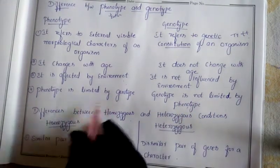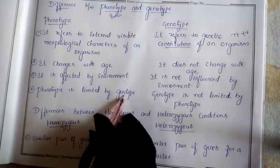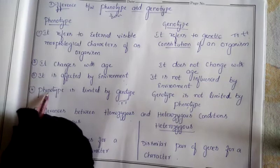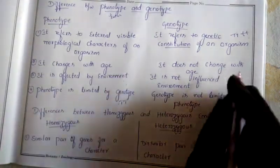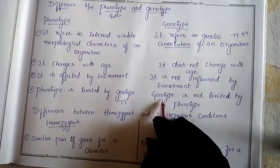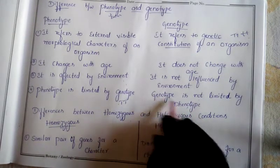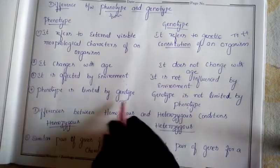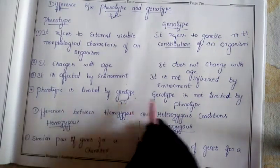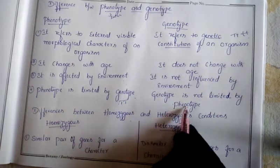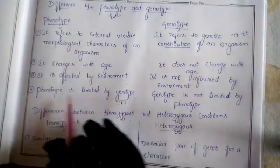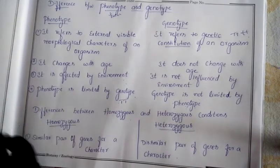Phenotype is limited to genotype whereas genotype is not limited to phenotype. Phenotype depends on the genes - on that basis only the external characters will appear. So phenotype is limited to genotype, but genotype does not depend on phenotype. The genes do not depend on the external appearance. Phenotype will depend on the genotype, but genotype will not depend on phenotype.